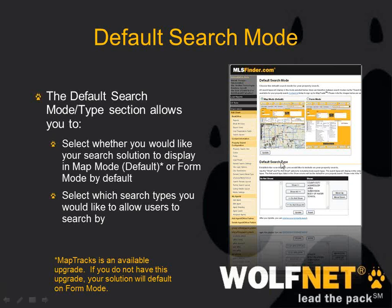The default search types section — basically these tabs at the top are different sorts of searches you can perform, whether it be by county, city, address, area, subdivision, body of water, or school. In this example market, these may not be available in your market, but these are the ones you can add to your search. If you don't want to show certain search types, you can just select them to remove.